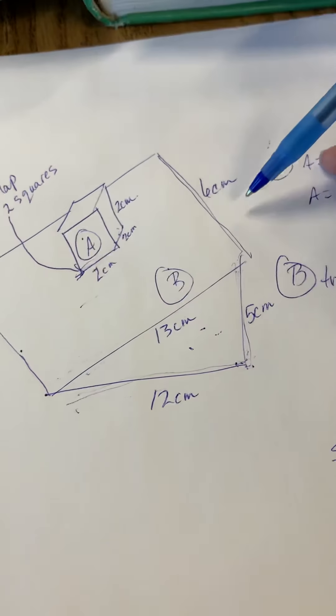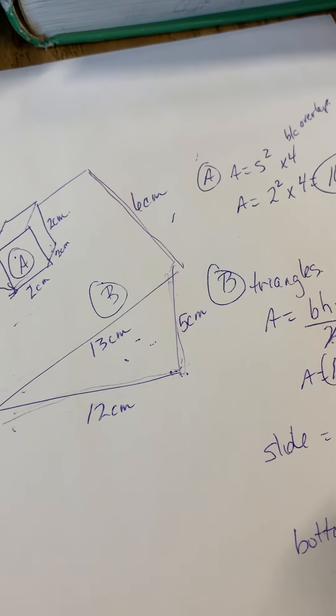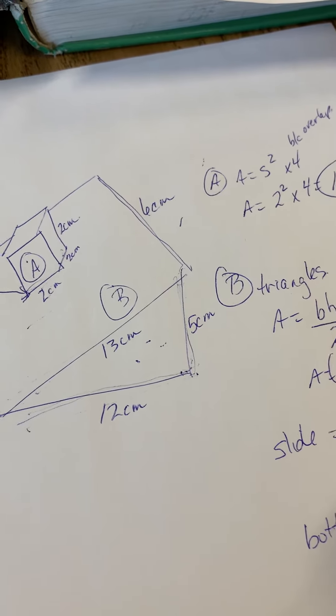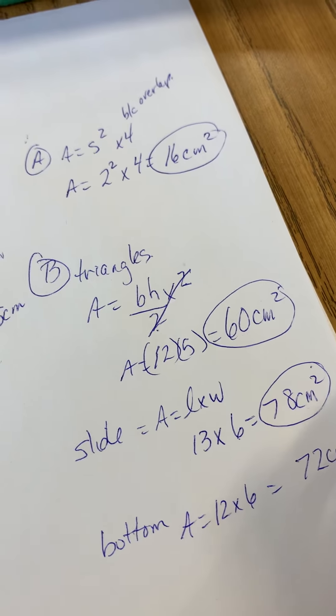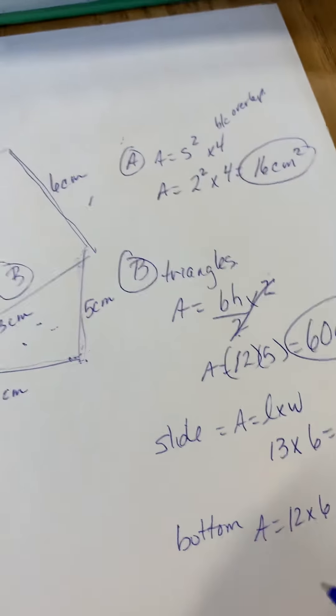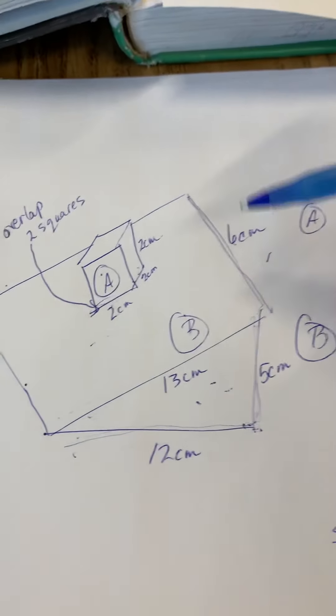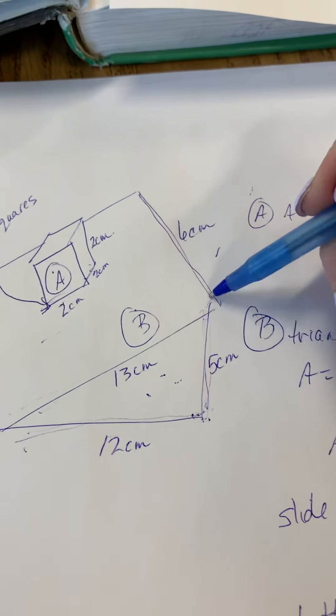Okay, so 12 times 6, which is 72 centimeters squared. And now I have one last piece to do, and that is what I call the spine, so this rectangle here.